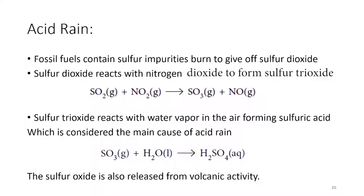Sulfur impurities found in fossil fuel cause many environmental problems. The burning of fossil fuel releases sulfur dioxide gas, SO2, which reacts with nitrogen dioxide, NO2, to form sulfur trioxide, SO3.